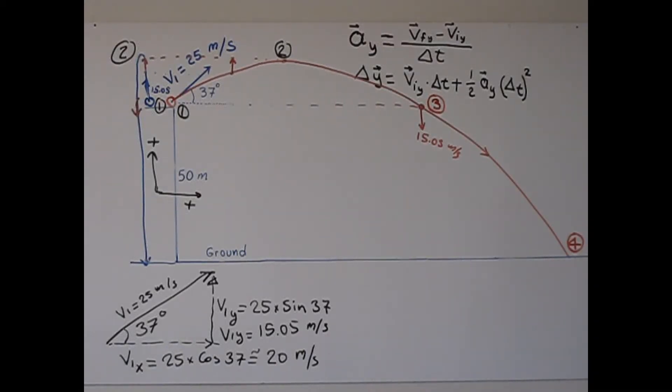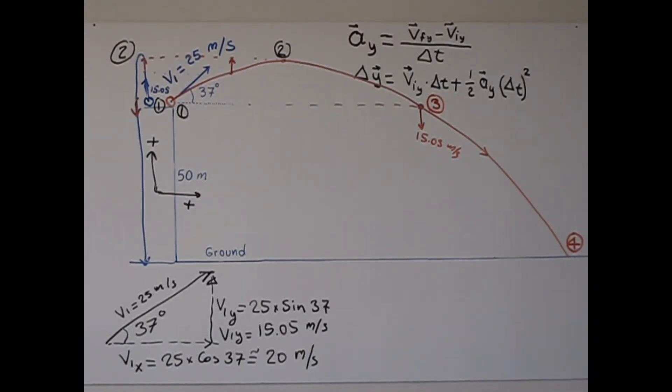I am going to continue the second part of the video. Previously I found this distance, 11.55 meters from here to here. I hit a ball with a velocity of 25 meters per second at 37 degrees above the horizontal.